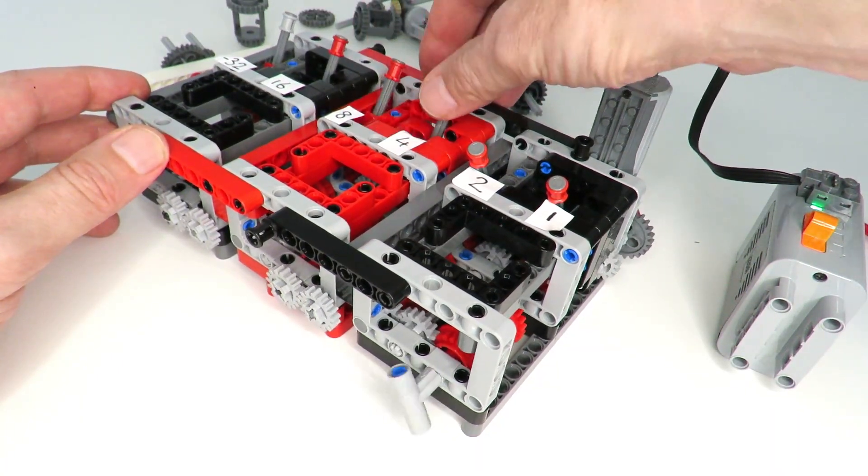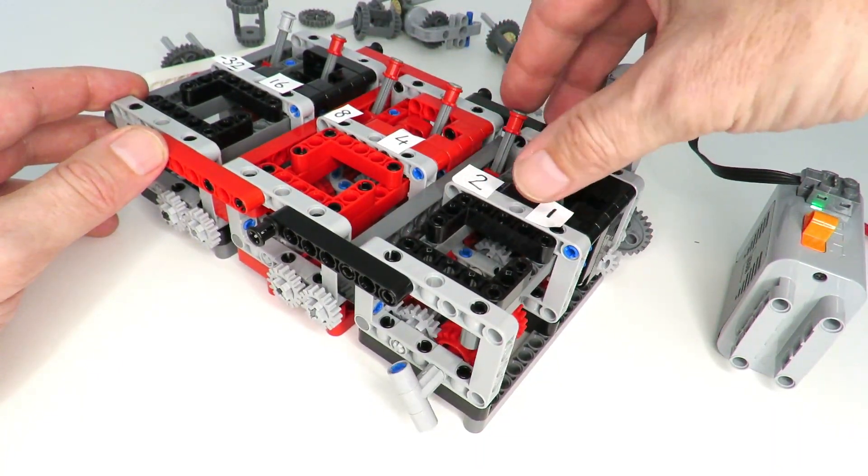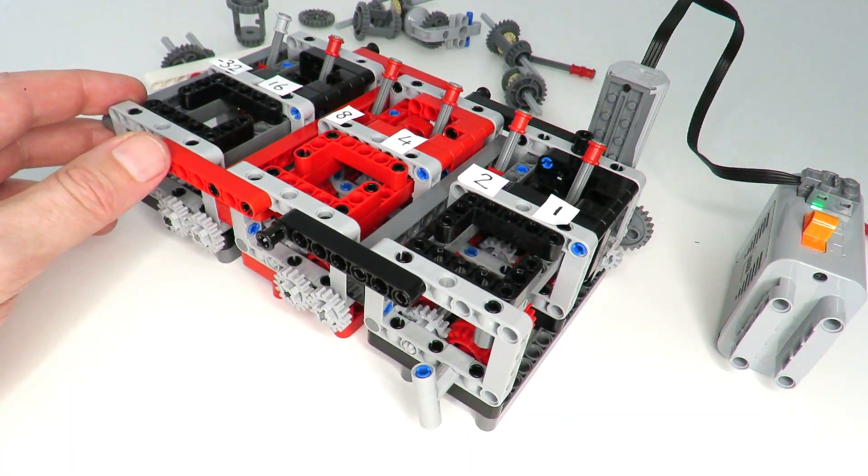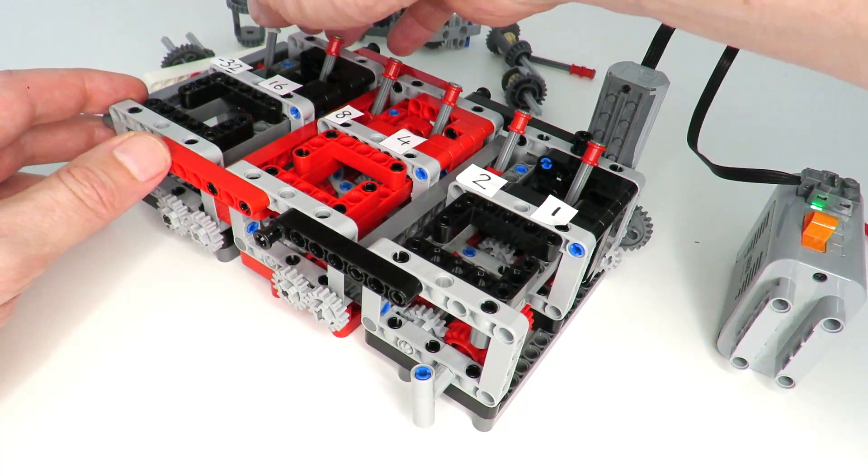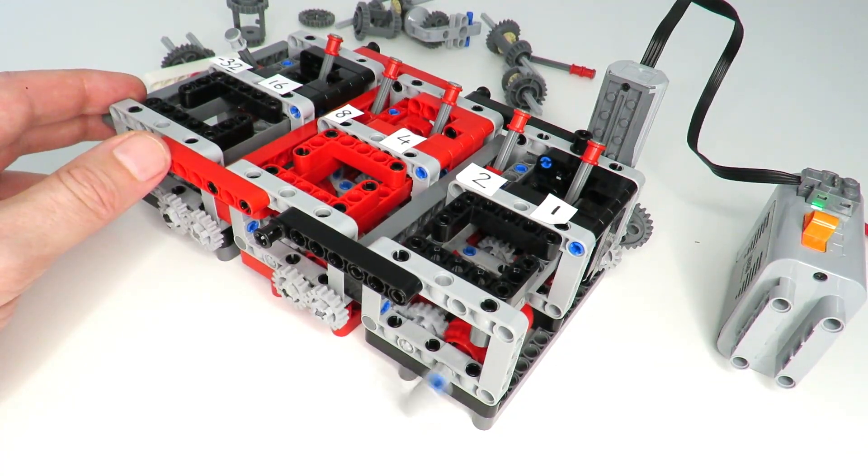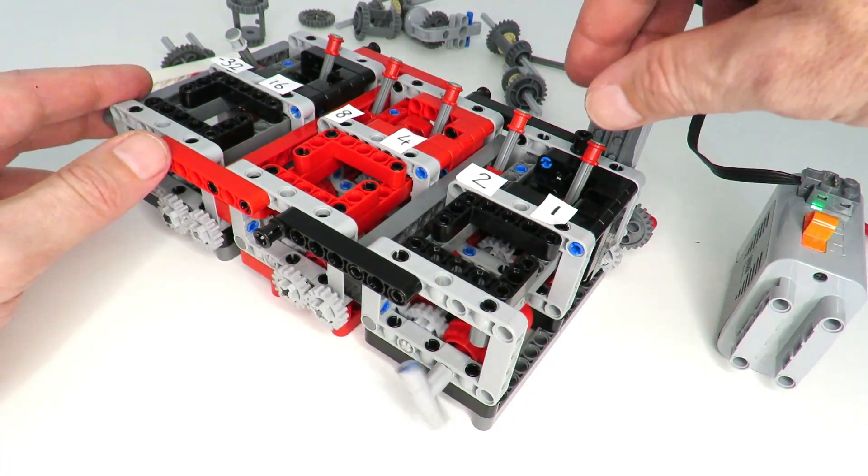We've also got the negative 32 on the end there that effectively combines a two's complement number, so by turning that on it should start turning in reverse at minus 32, and similarly we can...